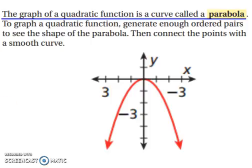The graph of a quadratic function is a curve called a parabola. To graph a quadratic function, generate enough ordered pairs to see the shape of the parabola, then connect the points with a smooth curve. You want to plot enough coordinates to see that it's a nice curve — a parabola.